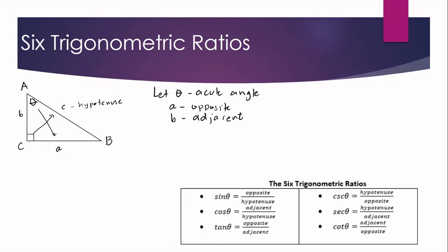The six trigonometric ratios are as follows: sine theta equals opposite over hypotenuse; cosine theta equals adjacent over hypotenuse; tangent theta equals opposite over adjacent. We also have cosecant theta, which is the reciprocal of sine, giving us hypotenuse over opposite. Secant theta is the reciprocal of cosine, giving hypotenuse over adjacent. And cotangent theta is the reciprocal of tangent, giving adjacent over opposite.